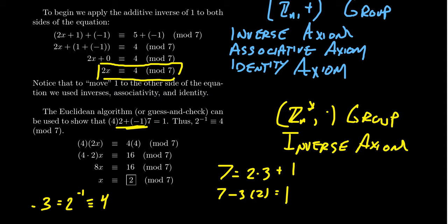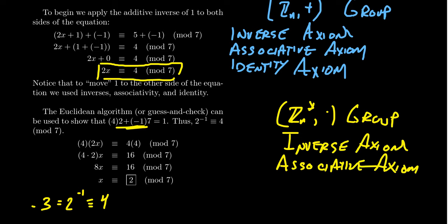So with this inverse in hand, you're going to multiply both sides of the equation by 4. So you're using the inverse axiom. There exists an inverse. It's going to be 4 right here. Multiply both sides of the equation by 4. Then the next thing we're going to do is reassociate. So we use the associativity axiom. So we can redo the parentheses on the left-hand side.